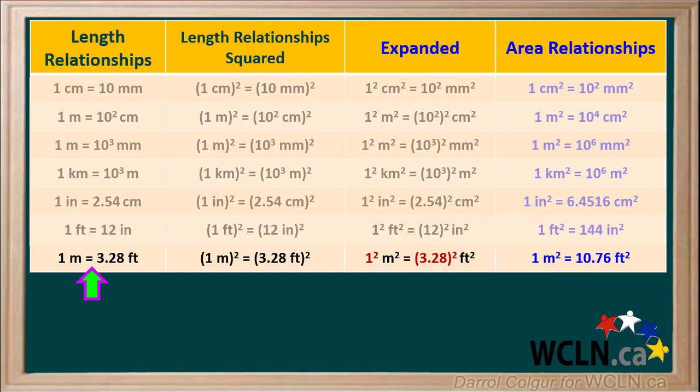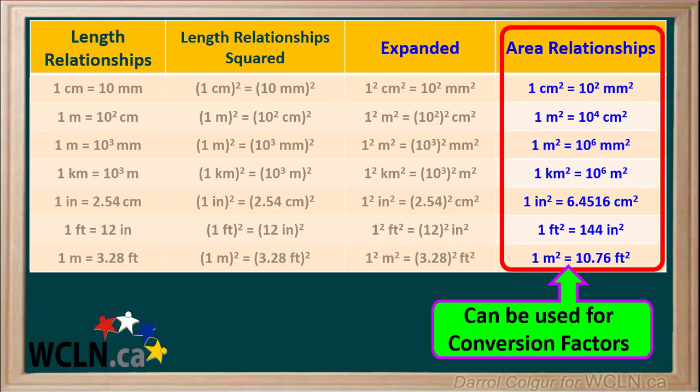Using this method of taking a length relationship, squaring both sides of the equation, expanding it so that numbers and units are squared separately, and working it out allows us to discover a corresponding area relationship for any length relationship. As you work through more of these, you'll get a lot faster. Once we've worked out an equation for an area relationship, we can use it as a conversion factor when we want to convert area units.